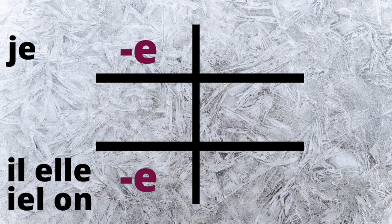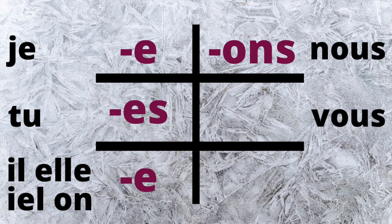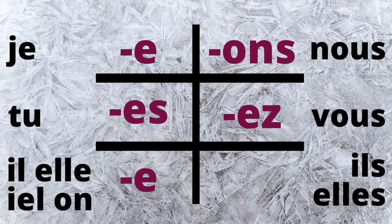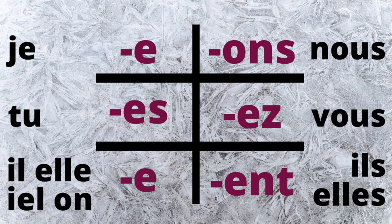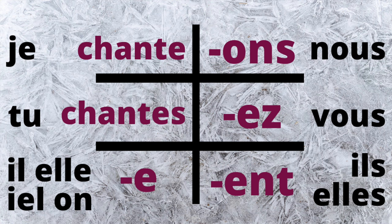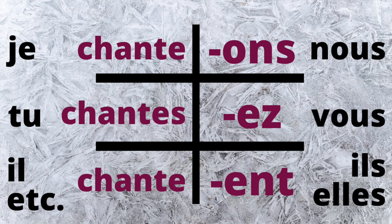The same ending -e applies for il, elle, and on. If you're using the subject pronoun tu, you add -es. With nous, you add -ons. With vous, you add -ez. And with ils/elles plural, you add -ent. So putting the stem 'chan' into this chart: je chante, tu chantes, il/elle/on chante, nous chantons, vous chantez, ils/elles chantent. Regardless of the different letters that come after each of these subject pronouns, they are all going to sound the same for the singular forms.